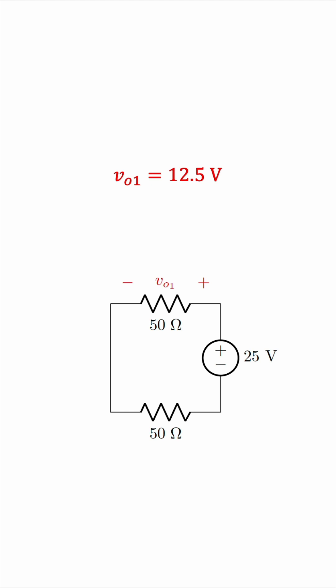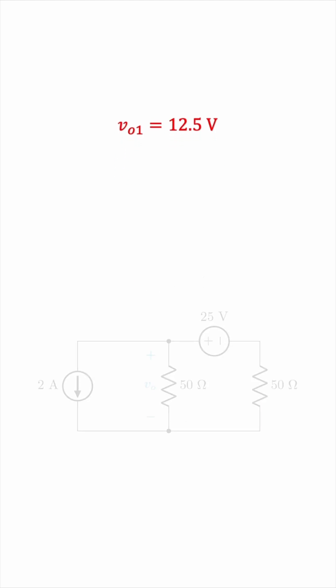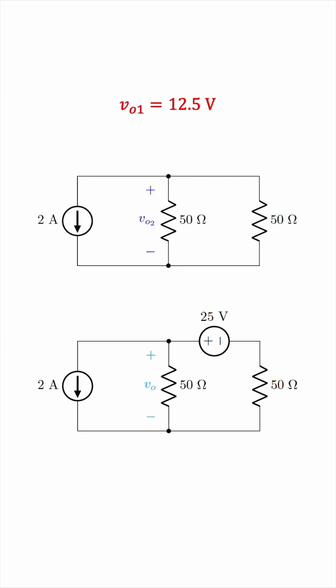So that's V0 in the first case, V01. Okay, going back to the original circuit, let's now consider the current source separately. So let's deactivate the voltage source by shorting it. The circuit becomes like this.